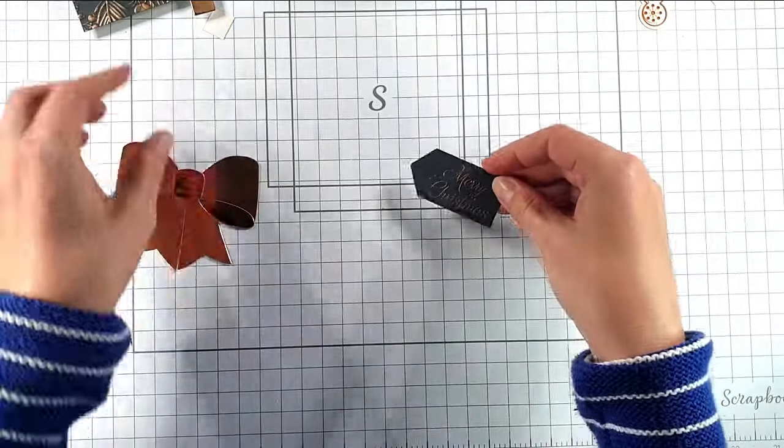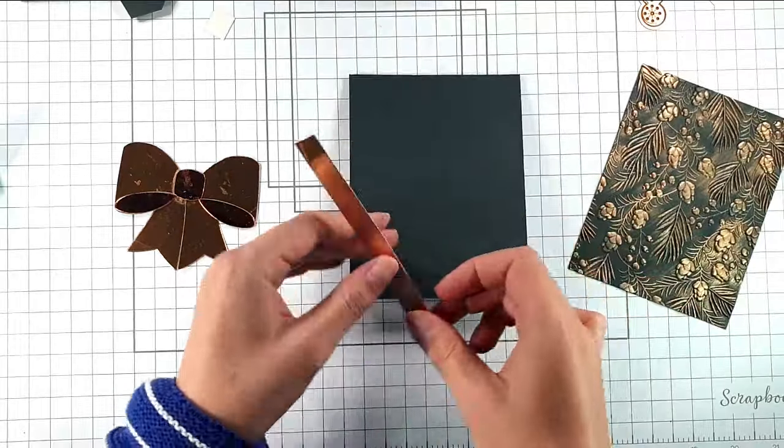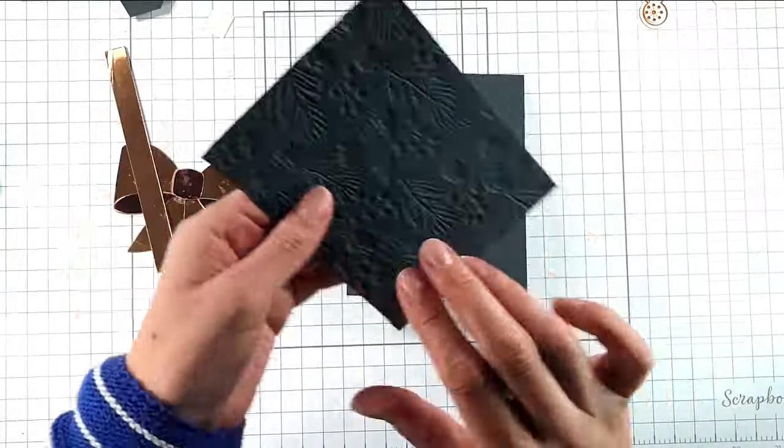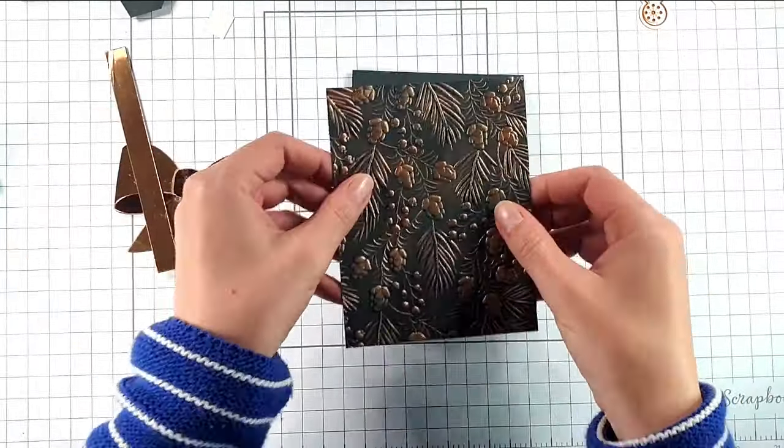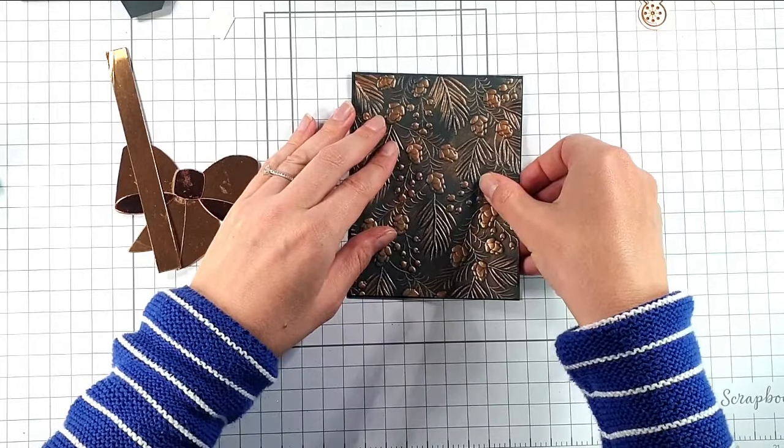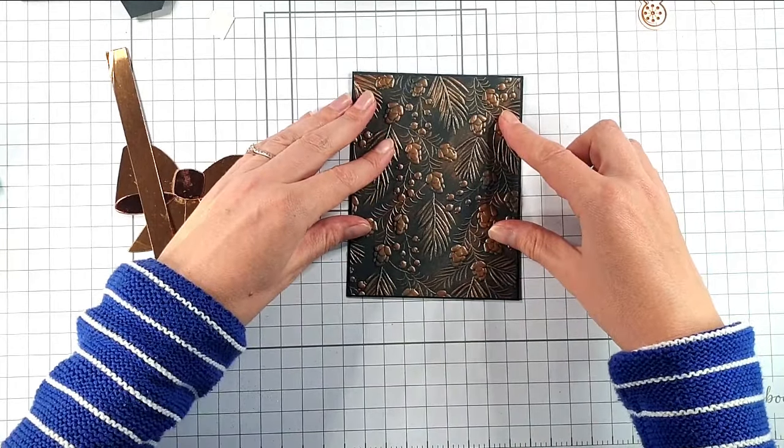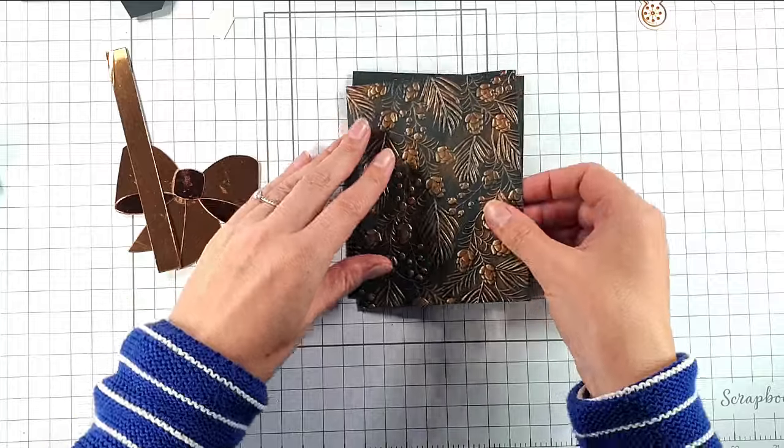So then I'm going to put my card together. So I'm going to glue this to my card front. I've cut this down to just an eighth of an inch smaller than my card front, so I get a really small border on the outside.